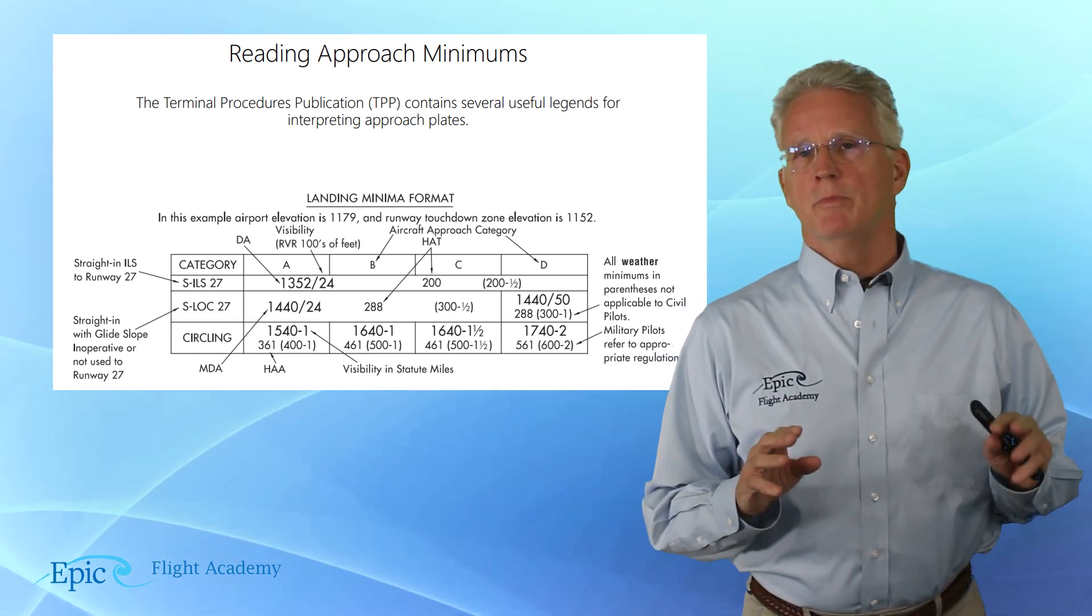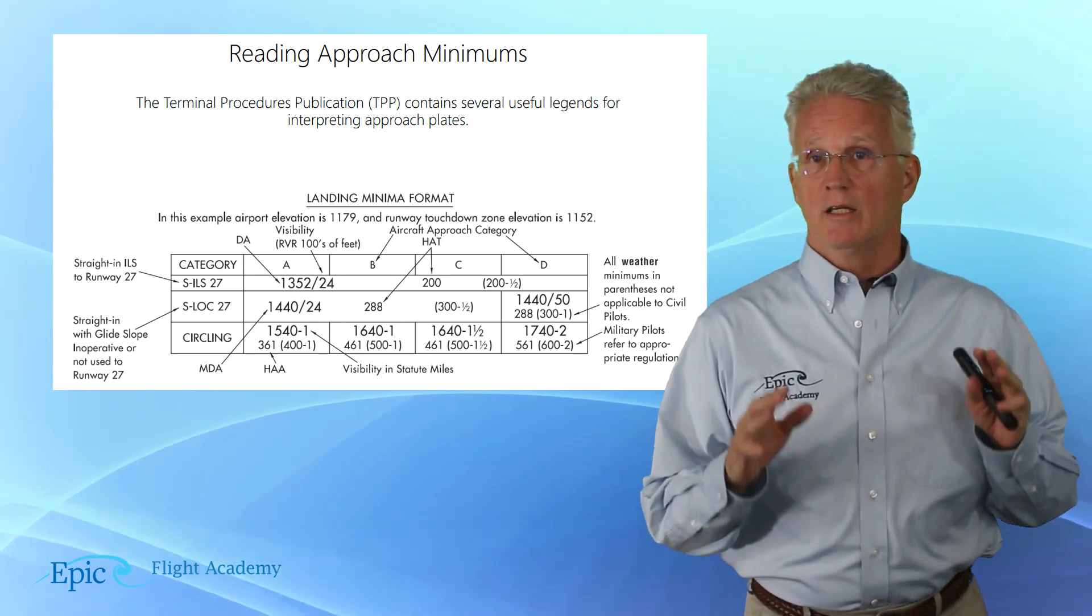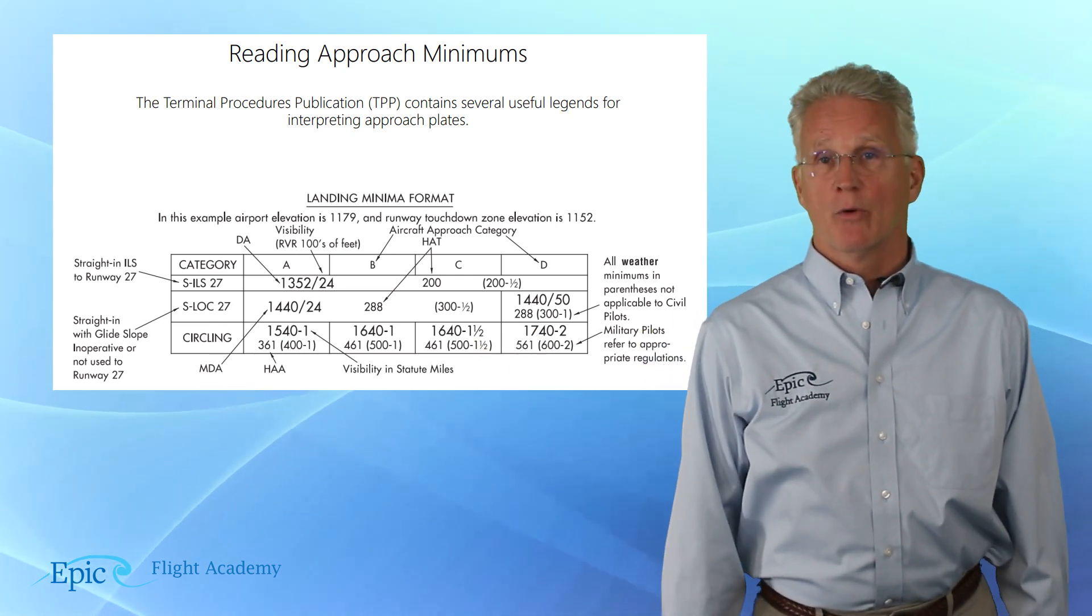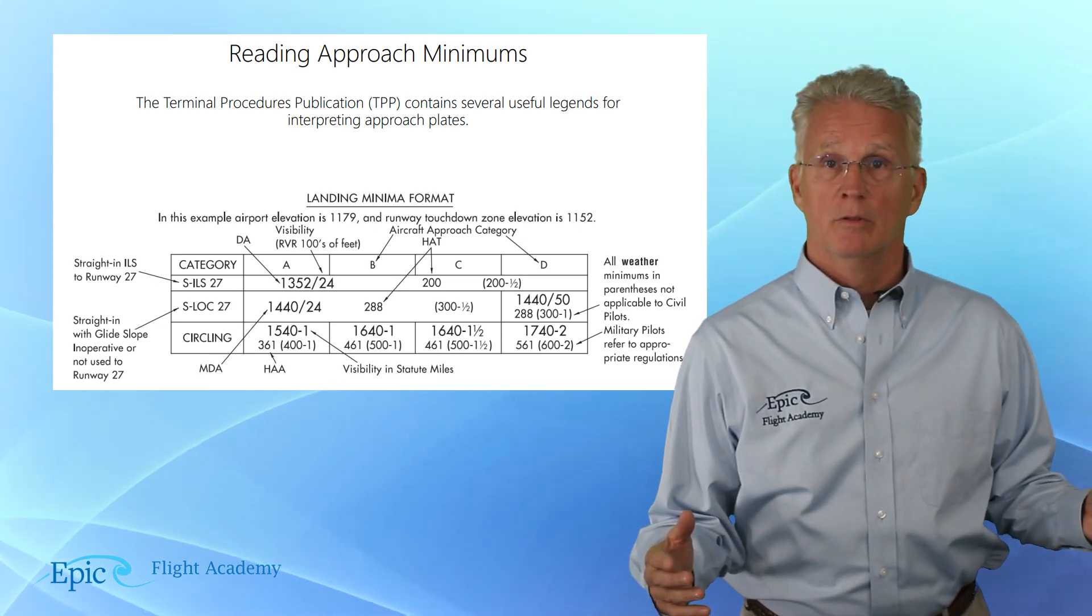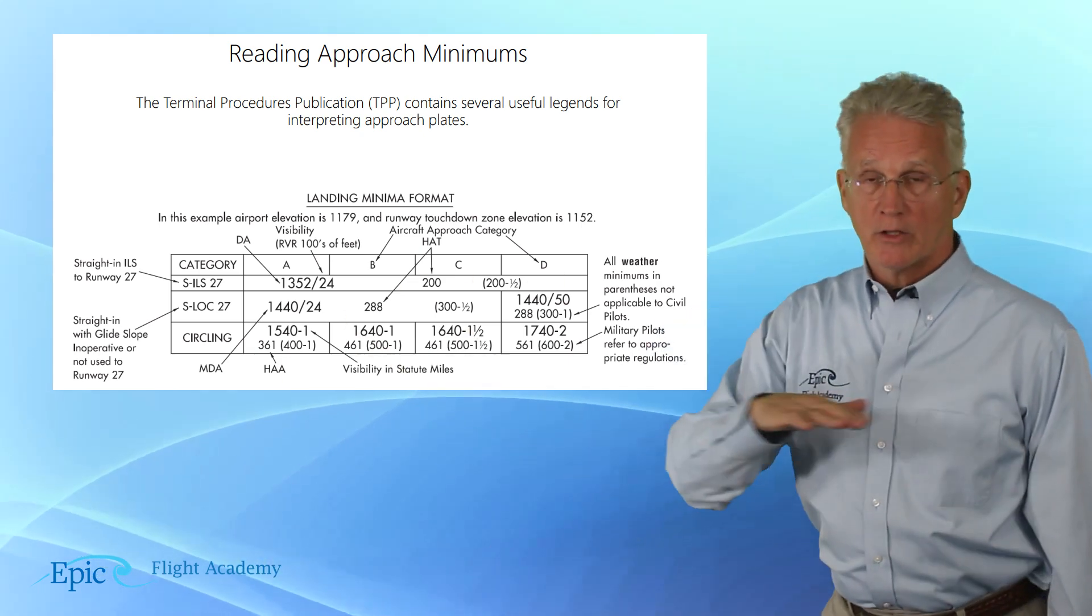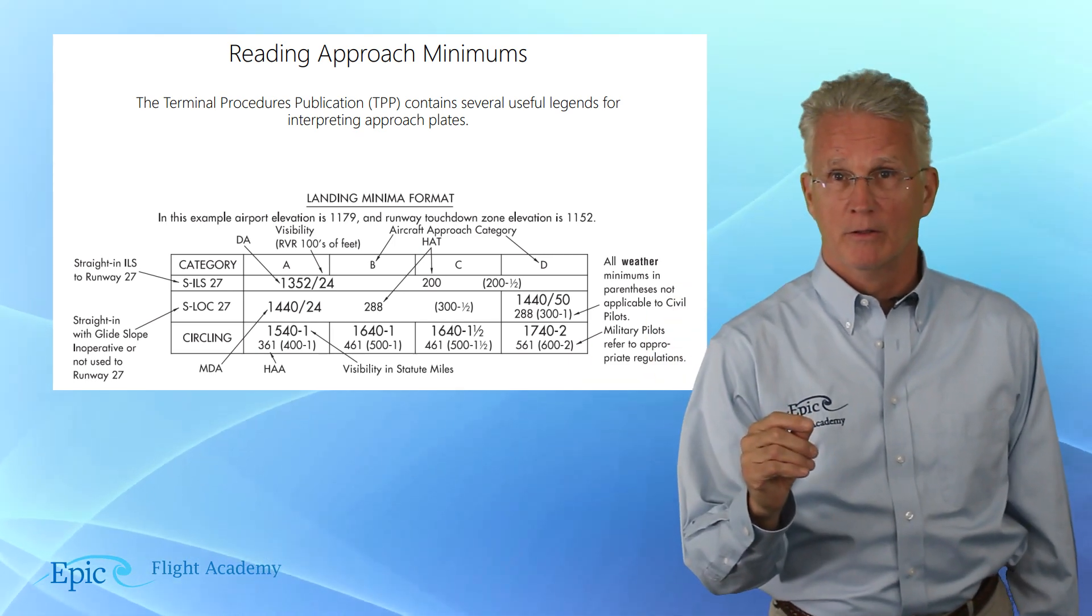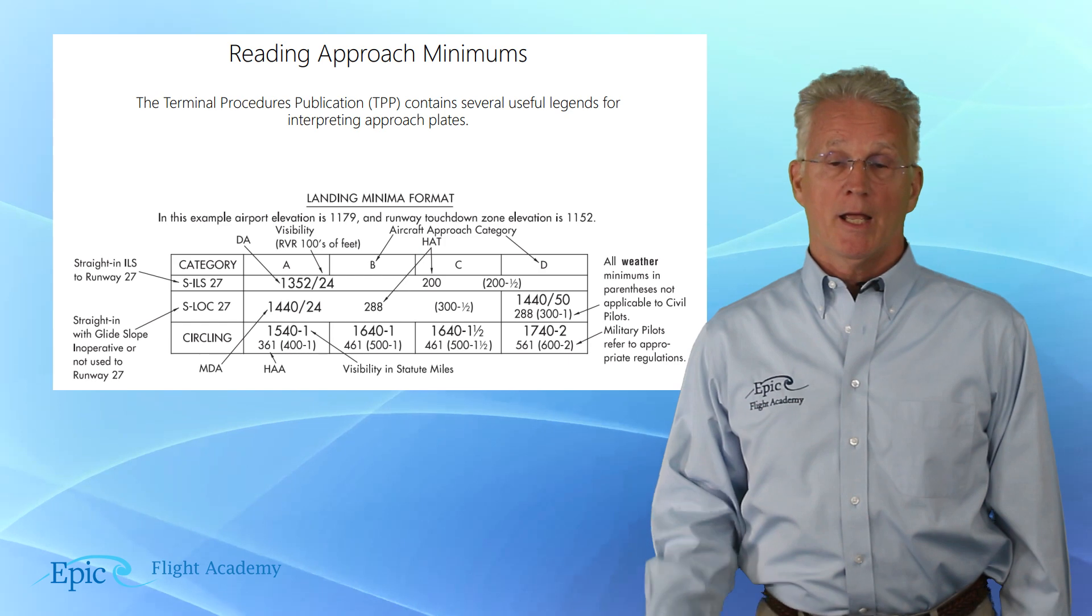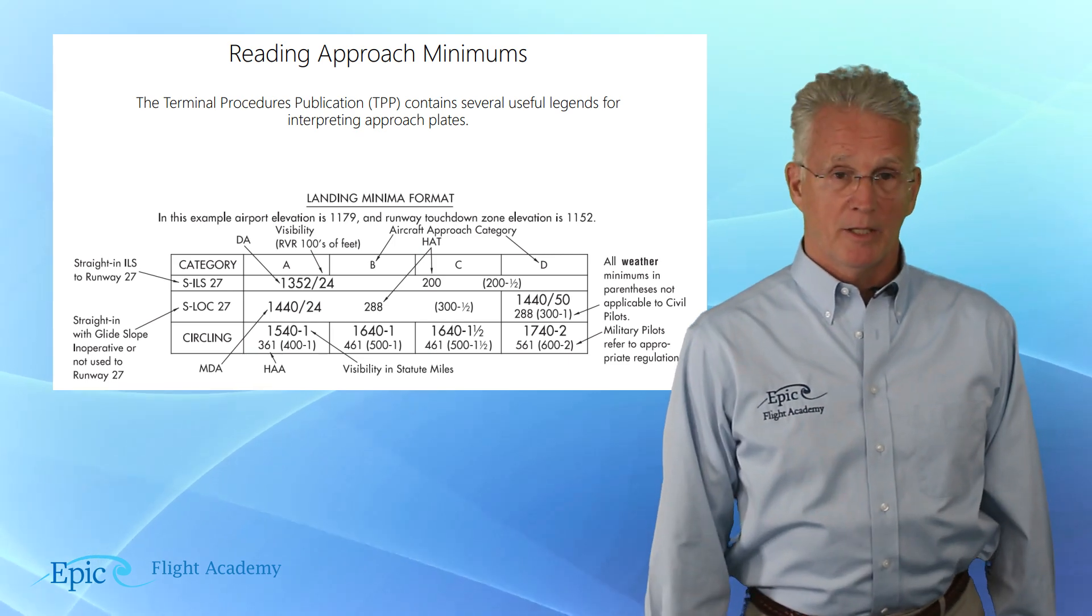Now, discuss this with your flight instructor. What this means is if we were going to do the straight-in ILS to runway 27, we would look at that row for our decision altitude and required visibility. If, for example, we had no glide slope and we were going to do the straight-in localizer to 27, we would look at the second row. And there we would see a slightly higher, well, in this case, not a decision altitude, an MDA, a minimum descent altitude, and our required visibility. And then in the bottom row, higher still, our circling MDA and visibility.